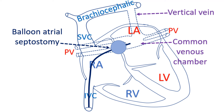TAPVC with a large ASD can survive long without many symptoms, but those with a small ASD need emergency surgery. The initial procedure can be enlargement of the ASD by a procedure known as balloon atrial septostomy, which uses balloons attached to small tubes introduced through blood vessels to enlarge the defect in the wall between the upper chambers. The baby is then considered for corrective surgery after stabilization of medical status. Those with the infracardiac variety will need emergency corrective surgery because of severe breathlessness.